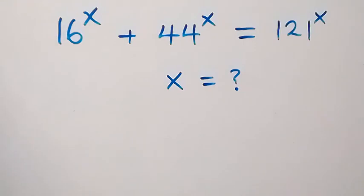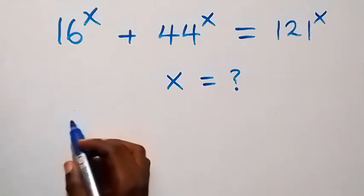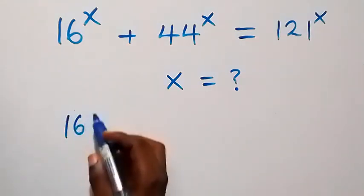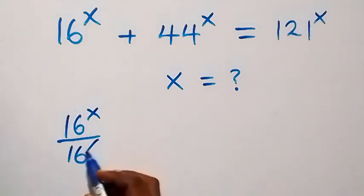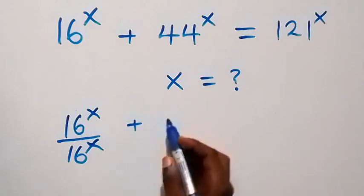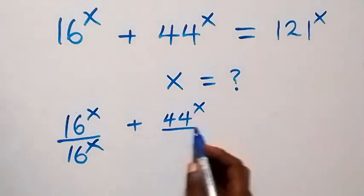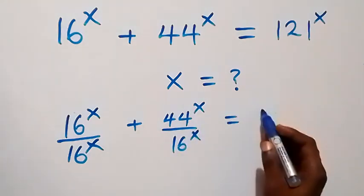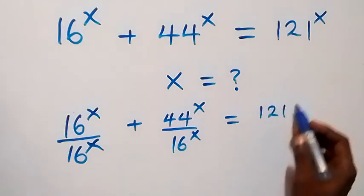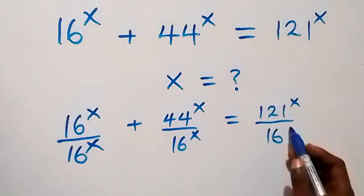Hello, you are welcome. To solve for x in this exponential equation, let's divide through by 16 raised to power x. We have 16 raised to power x over 16 raised to power x, then plus 44 raised to power x over 16 raised to power x, now equals 121 raised to power x over 16 raised to power x.